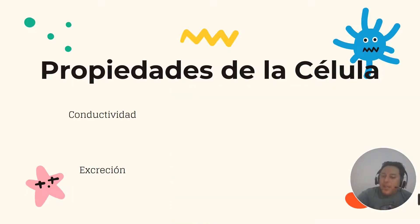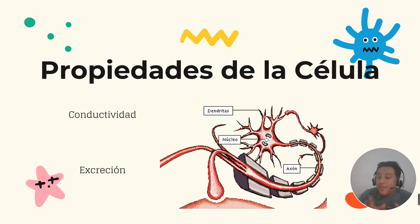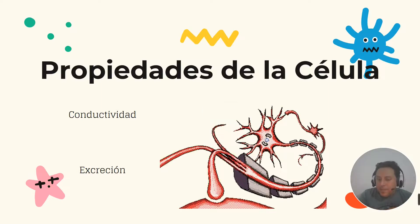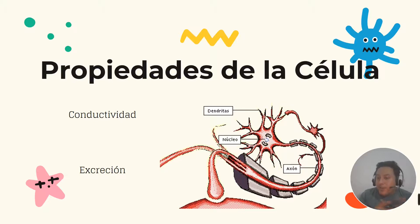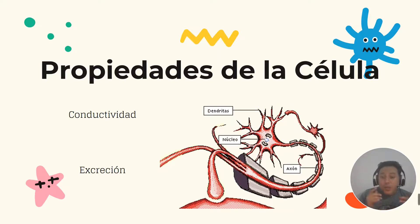Tenemos la propiedad de la conductividad, que es la capacidad que tiene una célula para transmitir un impulso eléctrico a través de ella. Las células especializadas en esta propiedad por excelencia son las neuronas. Gracias a ello nosotros tenemos pensamientos, movimientos, vida, sentimientos e incluso recuerdos.